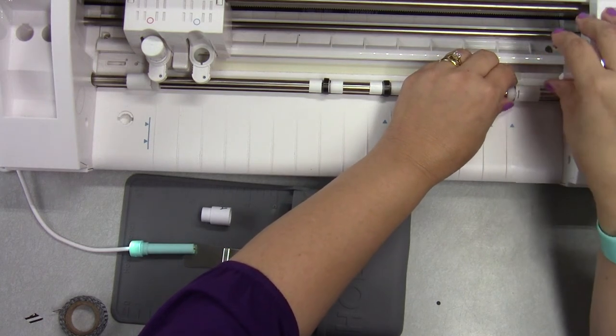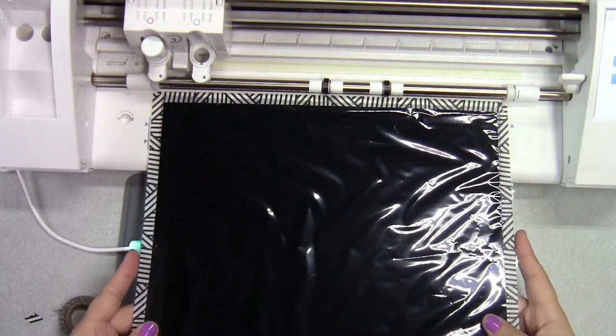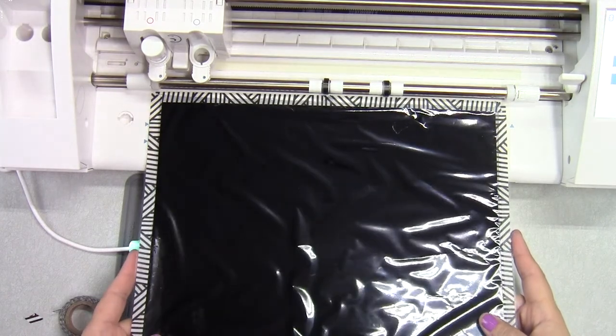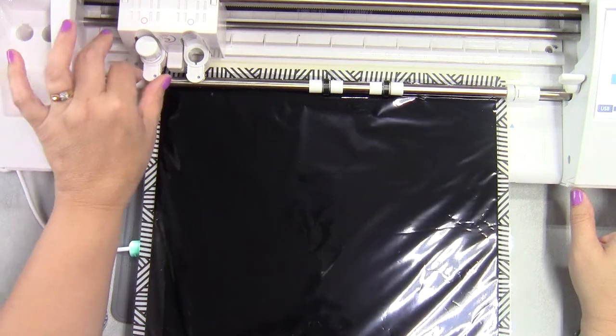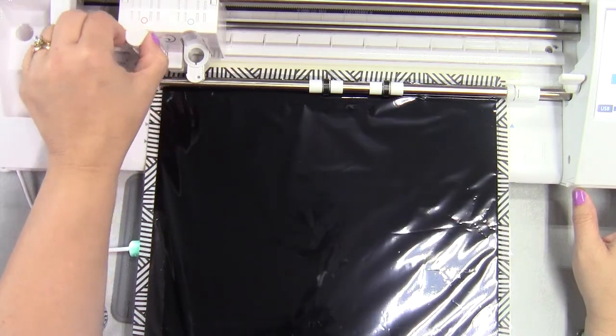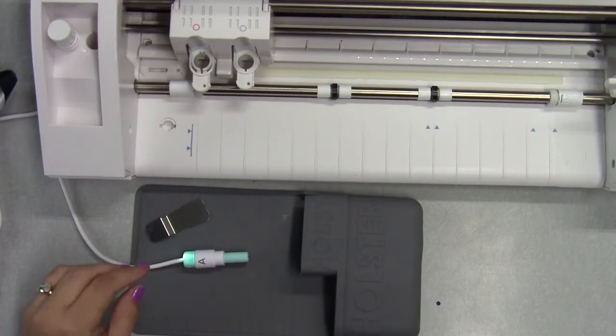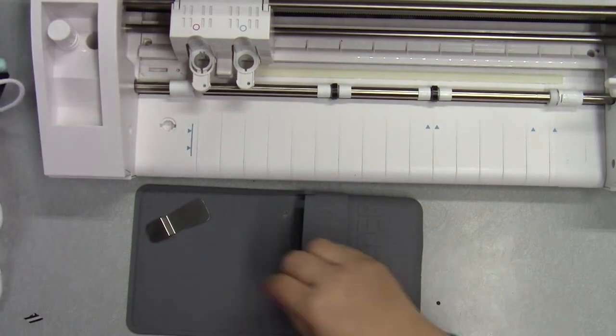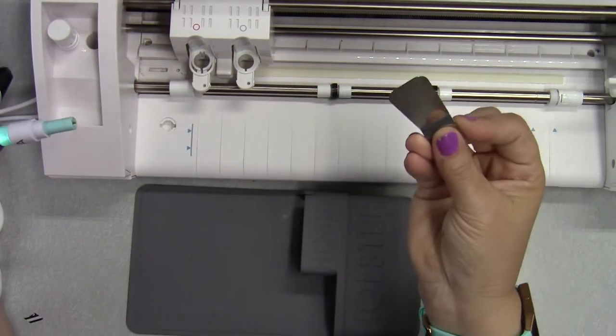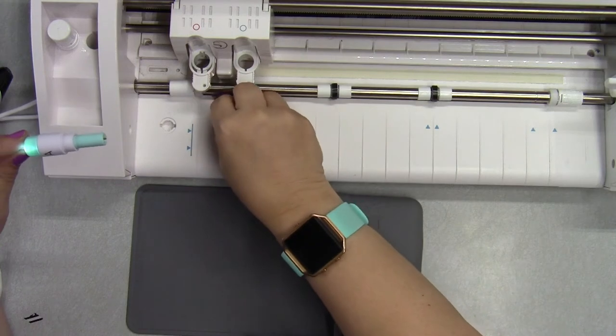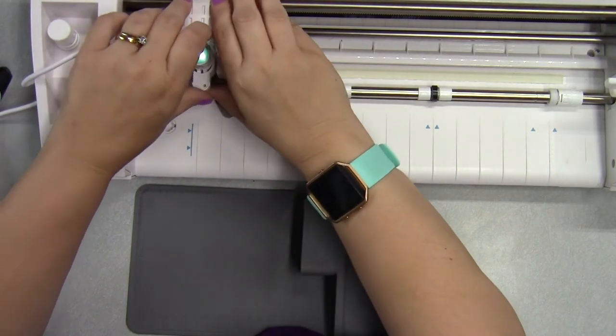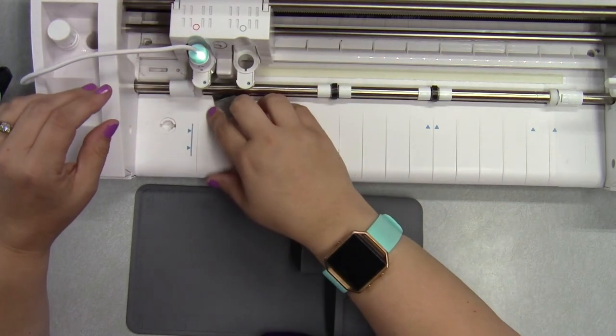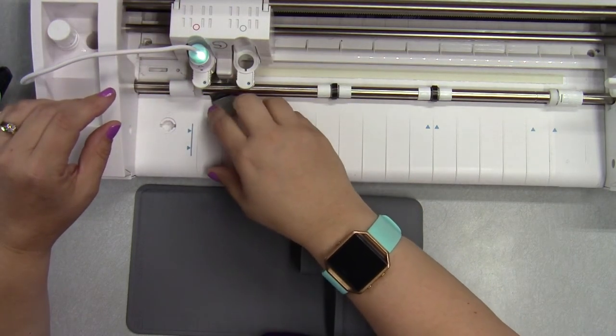Once I get my mat loaded, I'm going to go ahead and remove the auto blade, and I'm going to replace it with the adapter with the heat tool installed already. You can see it's lit up there, it's got power, it's ready to go. Make sure you use the little metal piece, because if you don't, you could melt some plastic part of your machine underneath there. That tool does get really, really hot.